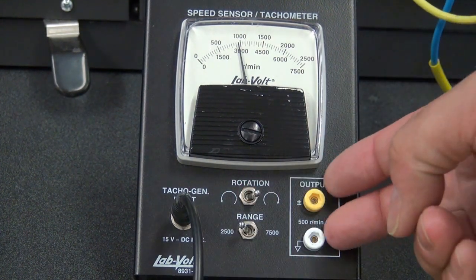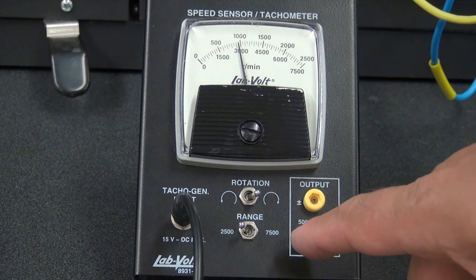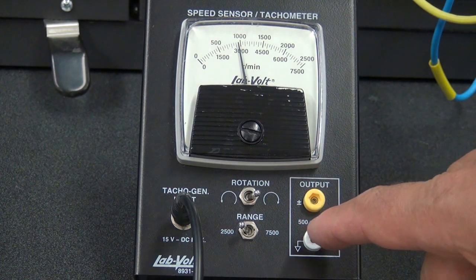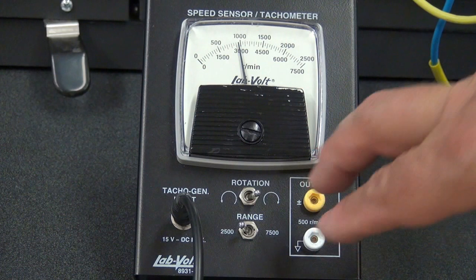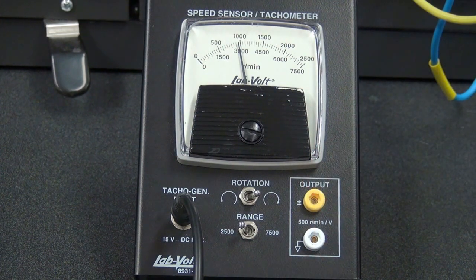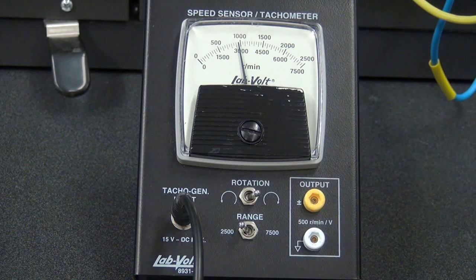There is an output that will give you one volt for each 500 rpm. It could be connected to a PID controller for speed control or any other device that is of interest to you.